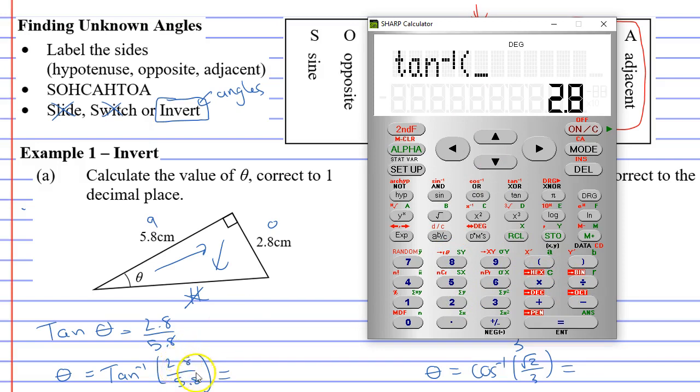Now I'm going to do 2.8 over 5.8, which you can also do just using divide. And close our brackets, equals, and we get 25.76 and so on degrees.